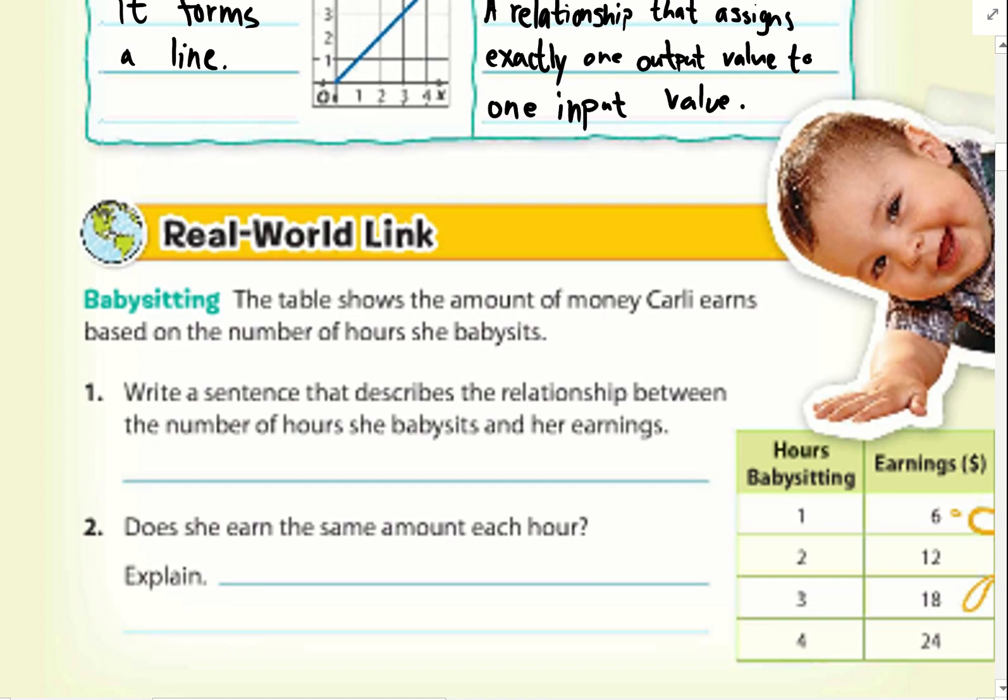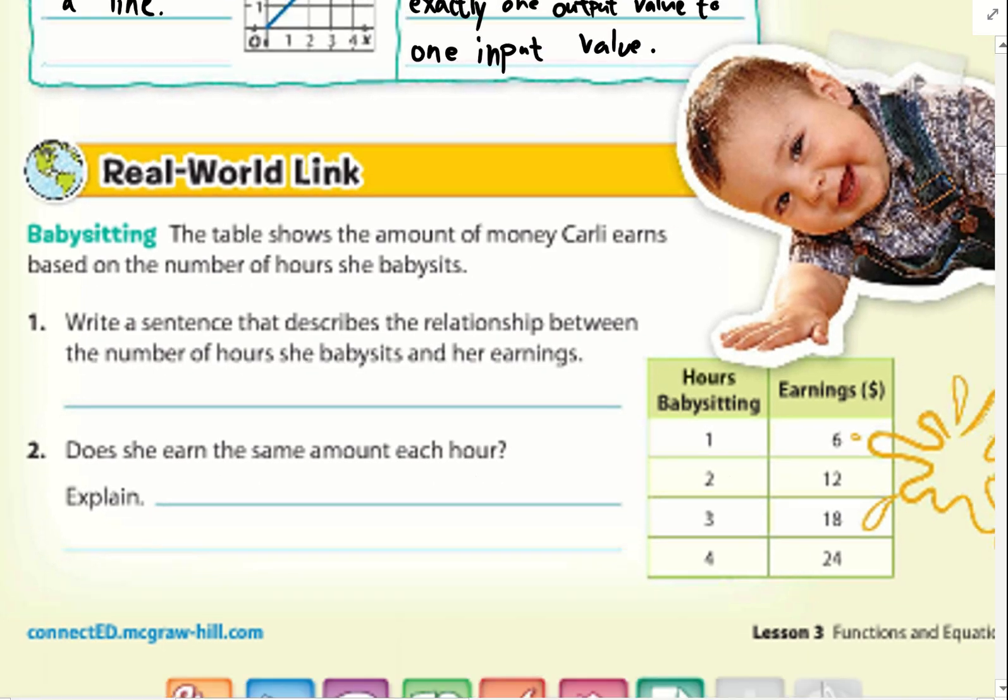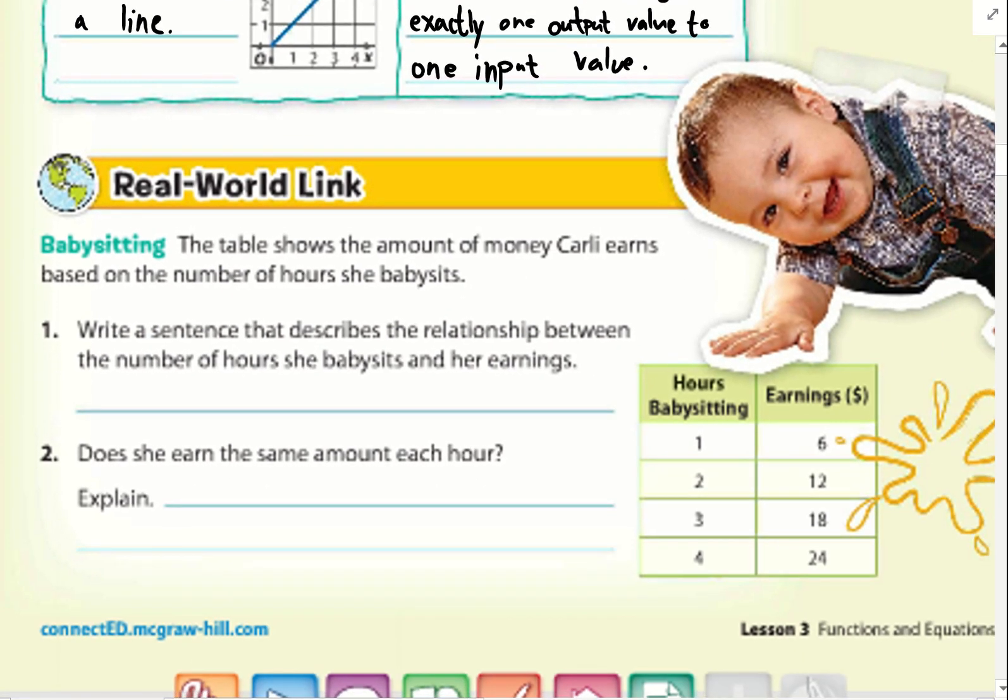Real world link: the table shows the amount of money Carly earns based on the number of hours she babysits. Write a sentence that describes the relationship between the number of hours she babysits and her earnings. For one hour, she earned $6. Two, $12. For three hours, $18. And four, $24. So I noticed that for every hour, she earned $6.